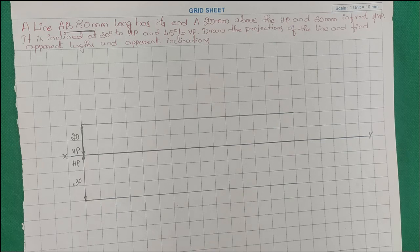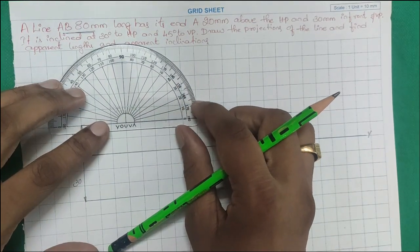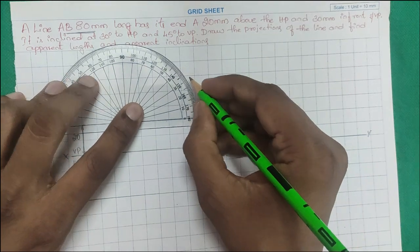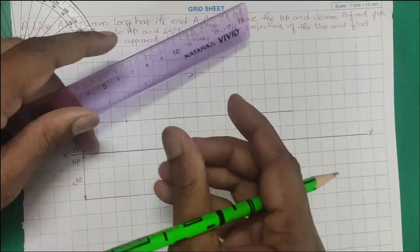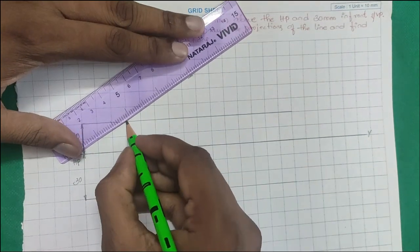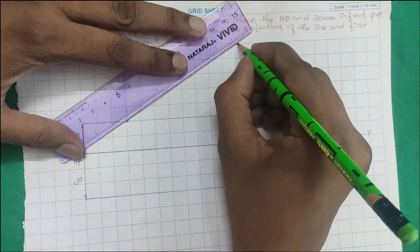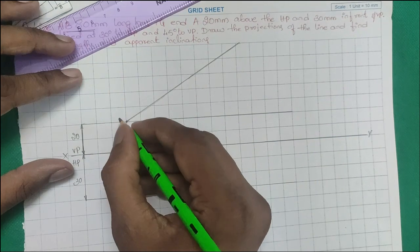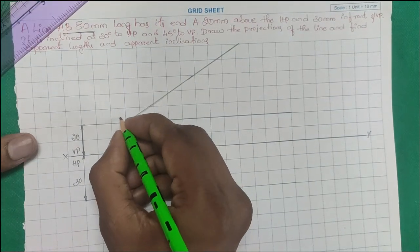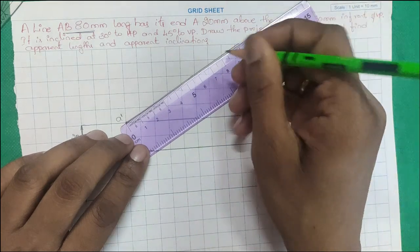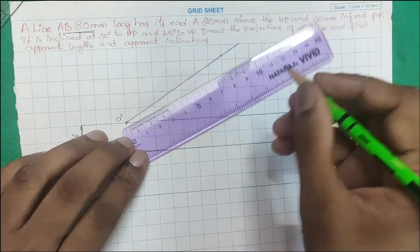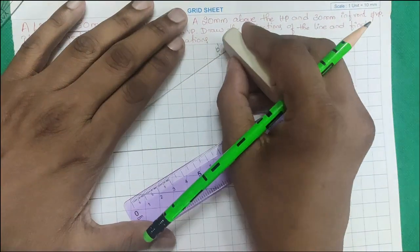HP inclination means the line goes above the XY line, and VP means below the XY line. We take a point and draw at 30 degrees inclination above the XY line — this is the front view. We draw a straight line and mark it as A dash. The true length is 80 mm, so we draw up to that length and mark the end as B dash.